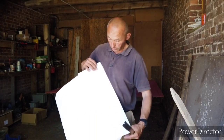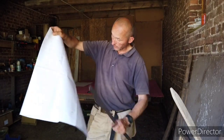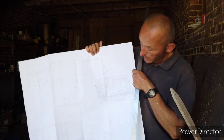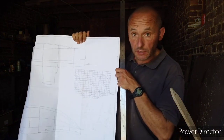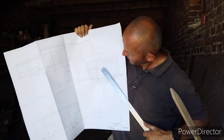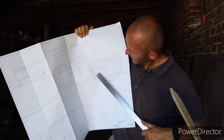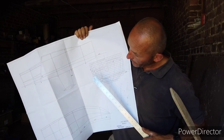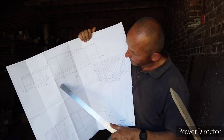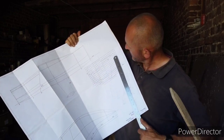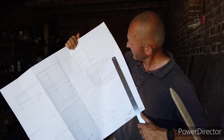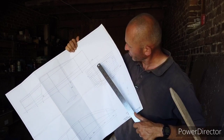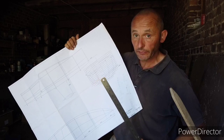Kabina będzie powiększona i ta pochylona ścianka będzie przesunięta w miejsce wręgu A. Tu jest plan z rozrysowanymi wszystkimi wręgami i zaczynamy od wręgu C.